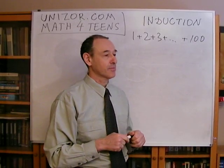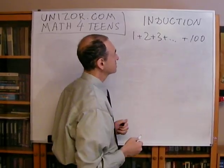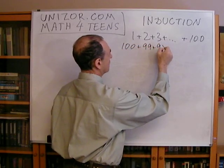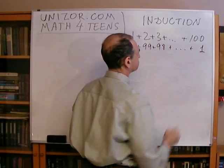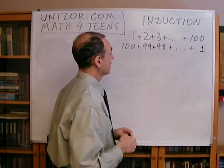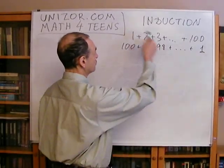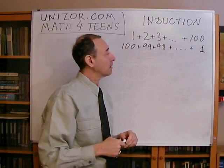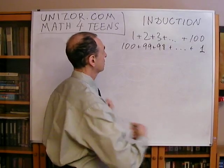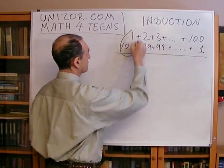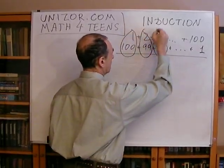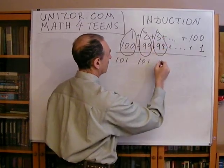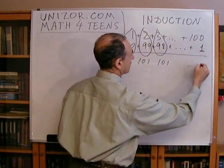Apparently what he did was he noticed that if you take this sequence of numbers and write it backwards — one hundred, ninety-nine, ninety-eight, plus one — you have exactly the same sum of numbers. And if you add them all together, it will be double the sum which was originally supposed to be calculated. But if you instead add vertically using these pairs first, he noticed that the sum of each pair is one hundred and one.